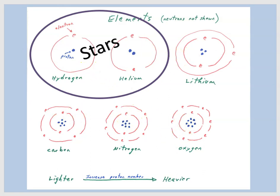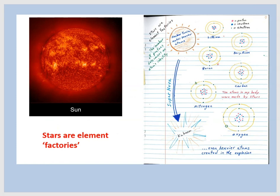So stars are element factories. In the cores of stars, new and heavier elements are being forged from hydrogen and helium. Over here on the right, here's our star, and I've just drawn out some of these elements. They have a different number of protons. That's what makes them different. And all these different kinds of elements were made by stars.